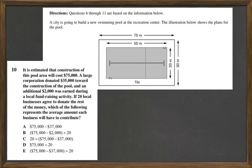Question 10 says, it is estimated that the construction of this pool area will cost $75,000. A large corporation donated $35,000 toward the construction of the pool, and an additional $2,000 was earned during a local fundraising activity.